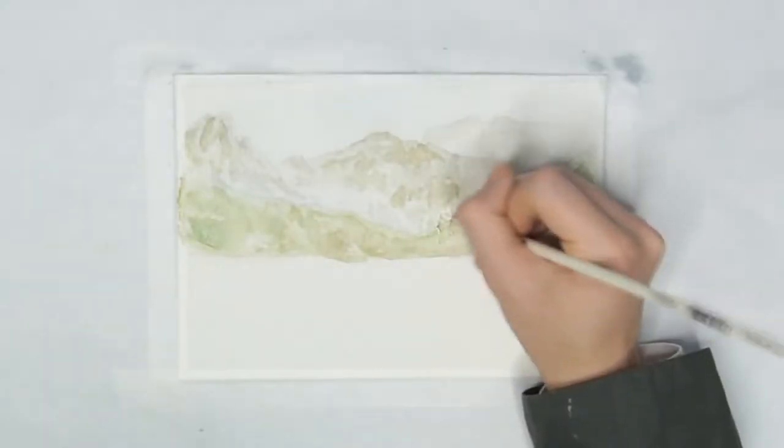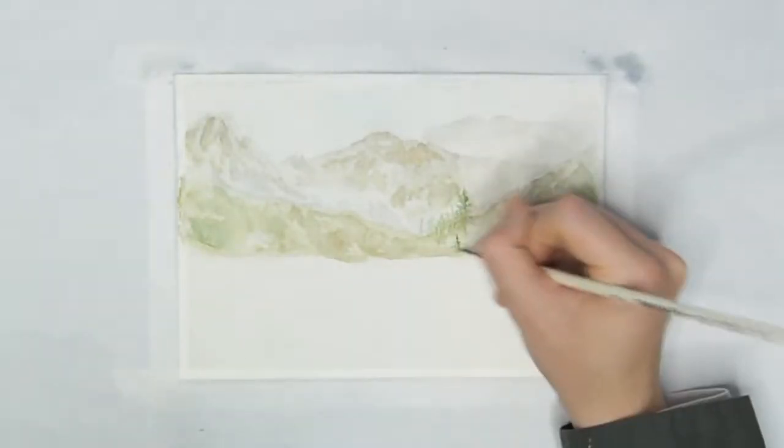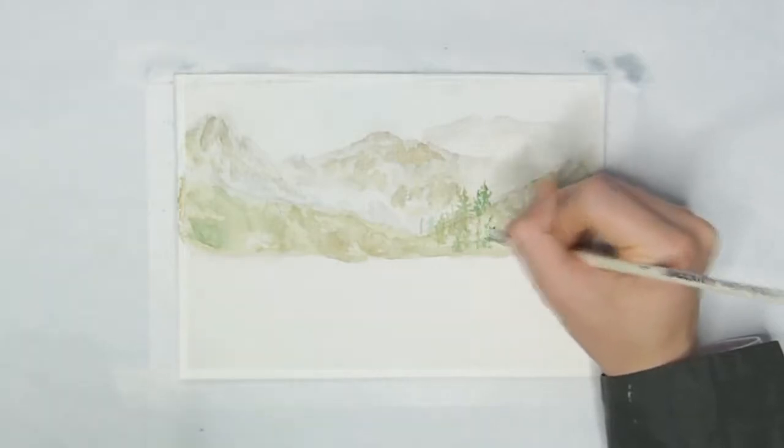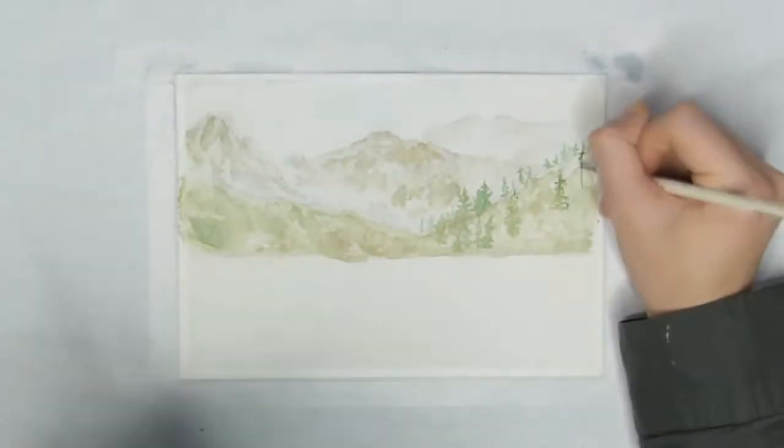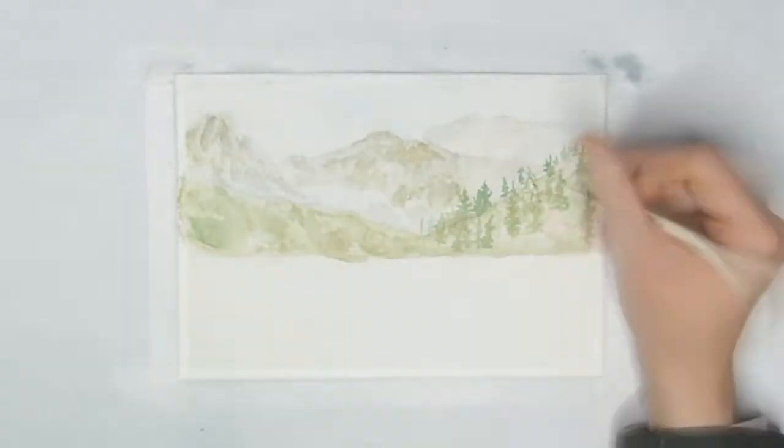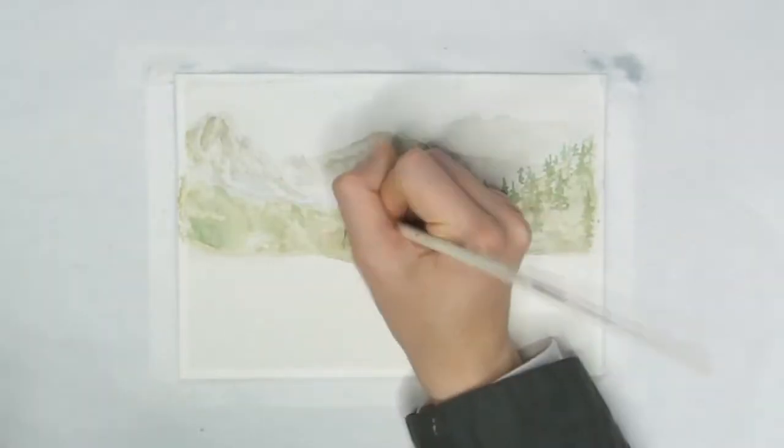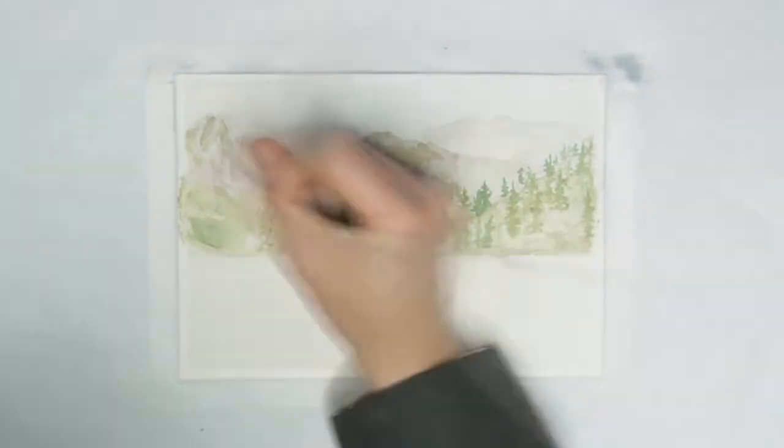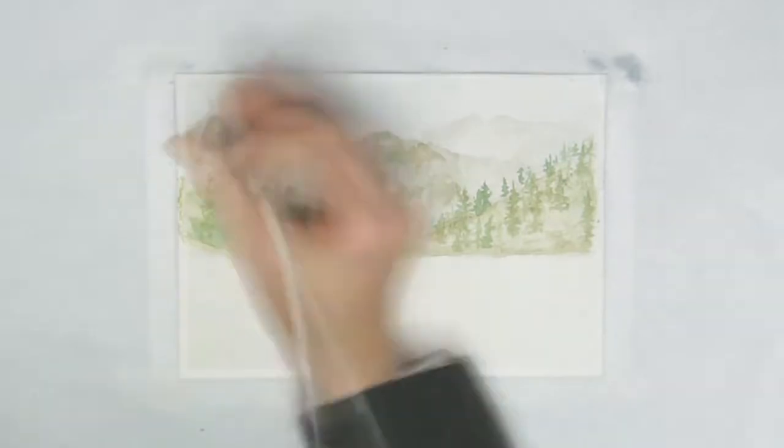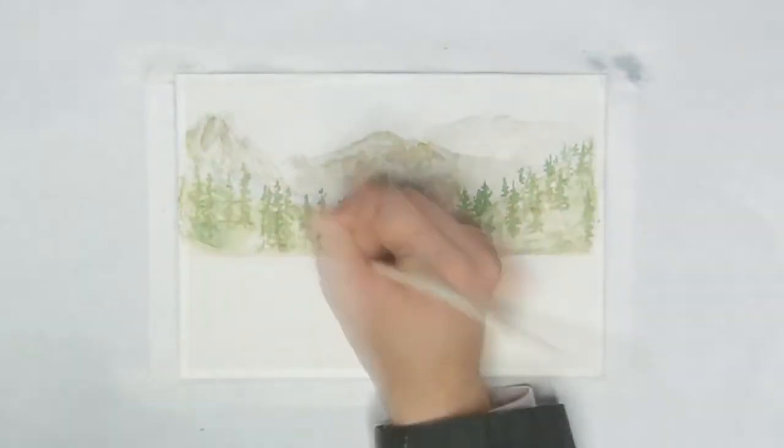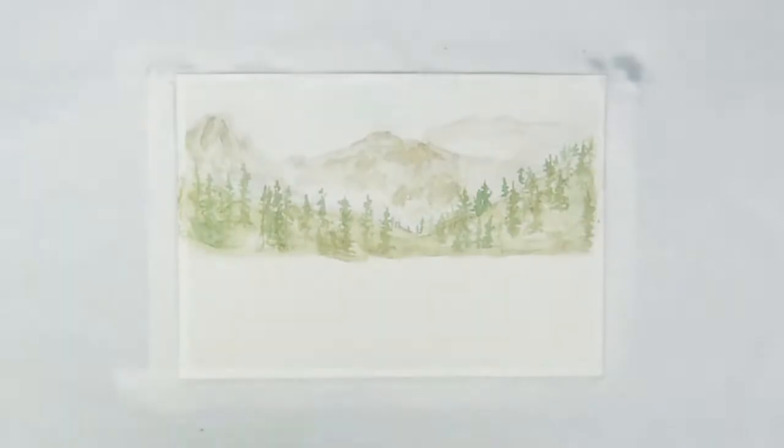And while the paint's still slightly wet, I'm painting in some trees in the distance with my details brush. Because the paint's still damp, it lets the trees blend out a bit, and this lack of a sharp contrast gives them the illusion of being more far away. After the paint's dried more, I'm then adding a few more trees, so it won't be blended as much, it just gives it some variation and it makes it look like some trees are further forward than others.